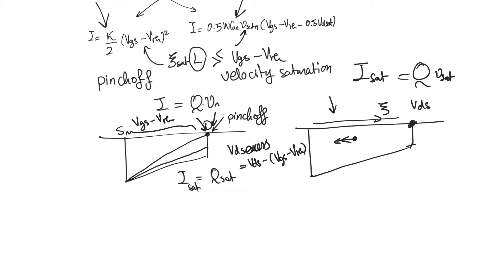If velocity saturation occurs first and we then raise VDS above the saturation value, the point in the channel at which velocity saturates moves earlier toward the source. From that point, velocity and channel charge density remain constant until the drain, since current must be the same at all points. Any excess VDS applied to a velocity-saturated transistor also leads only to channel length modulation. This means a transistor will see only one saturation mechanism, so the asymptotic model — where one mechanism dominates — is far more useful than a combined model.